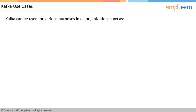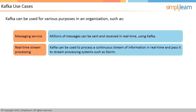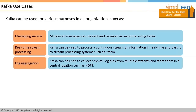Kafka can be used for various purposes in an organization, such as messaging service — millions of messages can be sent and received in real-time. Real-time stream processing: Kafka can be used to process a continuous stream of information in real-time and pass data to stream processing systems such as Storm. Log aggregation: Kafka can be used to collect physical log files from multiple systems and store them in a central location such as HDFS.